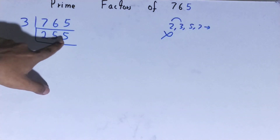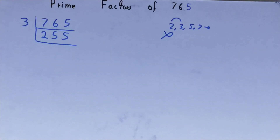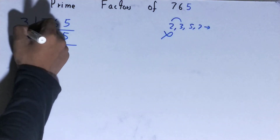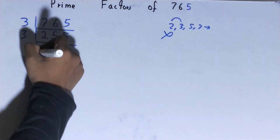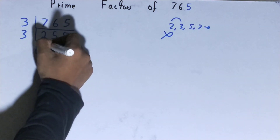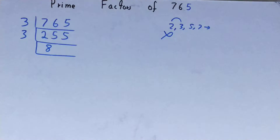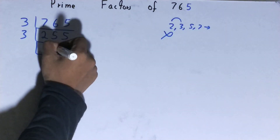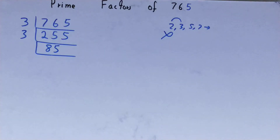Is 255 divisible by 3? Yes it is, so divide it. 3 eights are 24, 3 fives are 15 — and you will be left with 85.